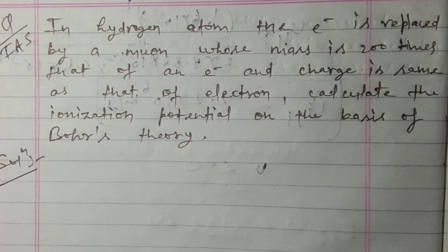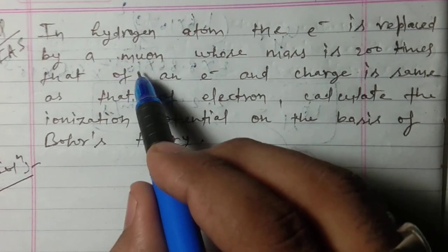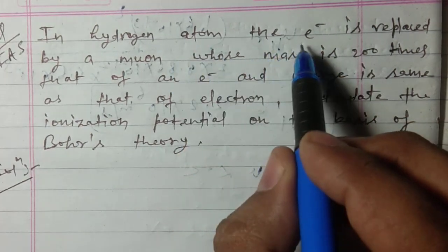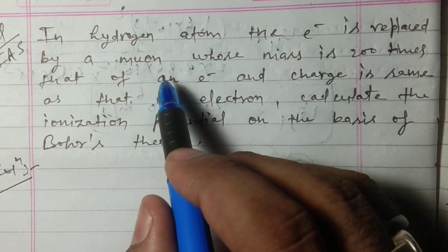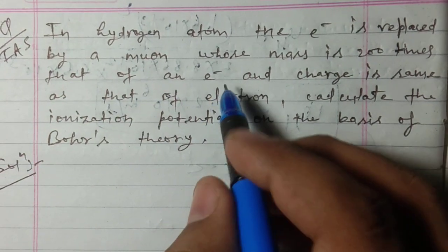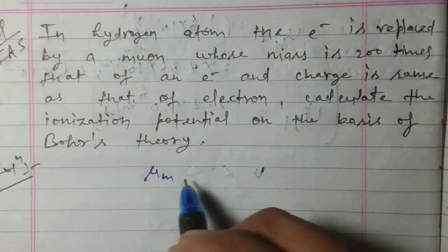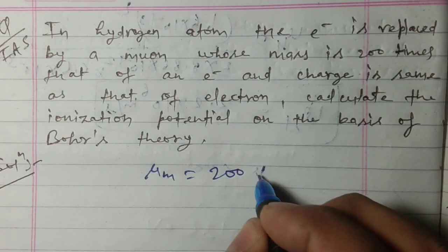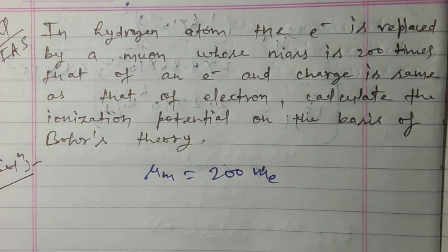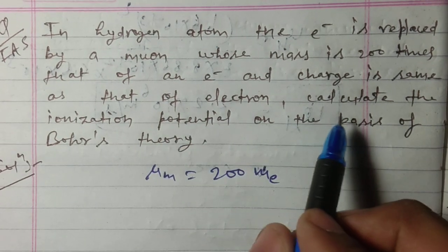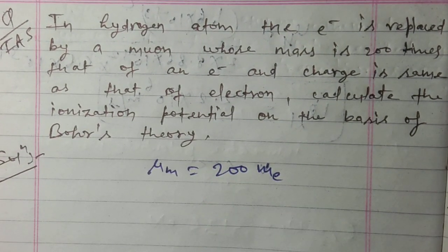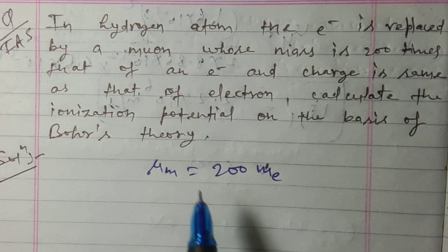The next question, also asked in IS exam, is: in the hydrogen atom the electron is replaced by a muon. The mass of the muon is 200 times that of an electron, i.e., mass of muon equals 200 times the mass of electron, and the charge is the same as that of the electron. Calculate the ionization potential on the basis of Bohr theory.